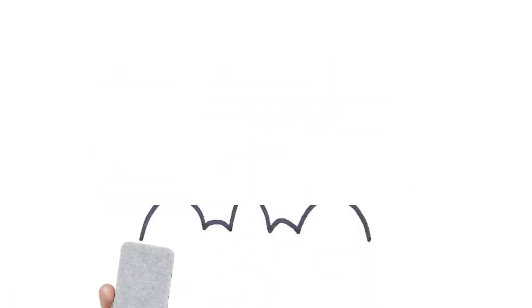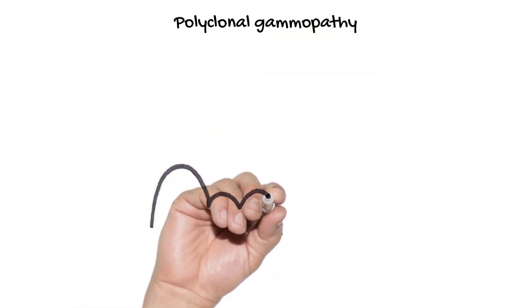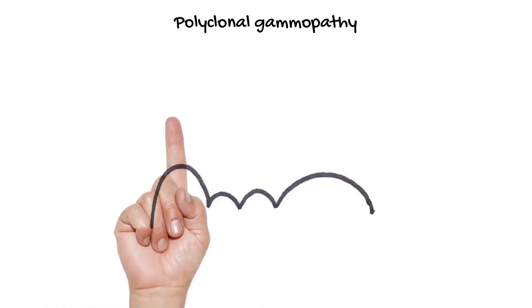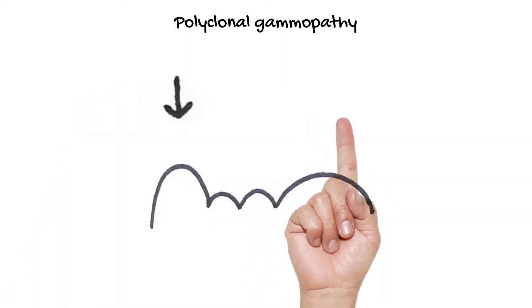With chronic inflammation there is hypoalbuminemia and marked hyperglobulinemia, that's called polyclonal gammopathy.